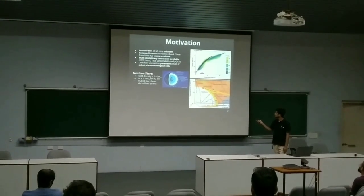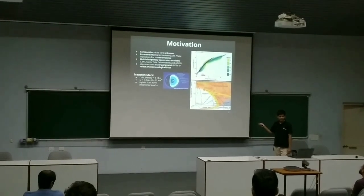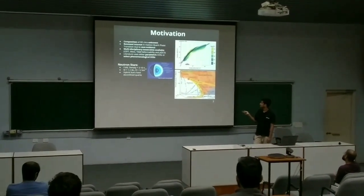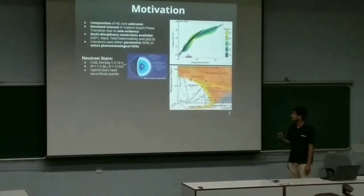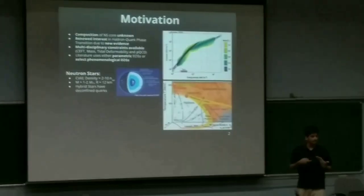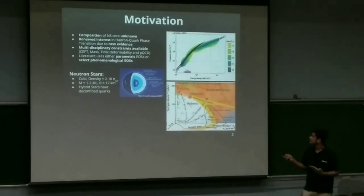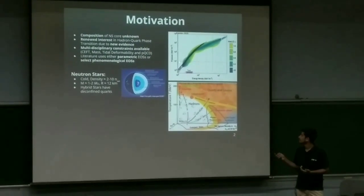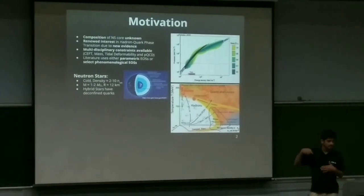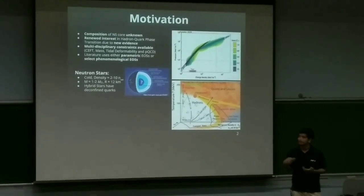If you see the phase diagram, the temperature and density, neutron stars lie at very high densities and low temperatures. And there are no terrestrial experiments which probe this area. So this makes the study of neutron stars even more interesting. Also it has been conjectured that there is a hadron to quark phase transition which can occur inside neutron stars. There are a couple of papers which show new evidence, theoretical evidence, for this to happen, like this plot here, where they show a kink in the equation of state which is representative of a phase transition.